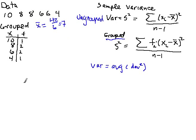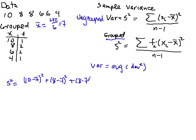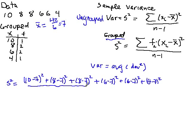Now let's go through and calculate the variance from each of the data points here. We want to look at the difference between each data point and the mean, which is 7. So we'll look at (10 minus 7) squared, plus (8 minus 7) squared, plus (8 minus 7) squared, plus (6 minus 7) squared, plus (6 minus 7) squared, plus (4 minus 7) squared. And this is then divided by — since we've chosen to illustrate the sample variance — the sample size minus 1, which would be 5.